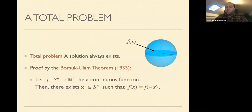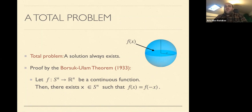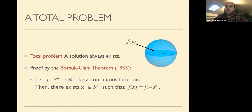The Borsuk-Ulam theorem will appear a few times throughout the talk. For completeness: it states that if you have a continuous function from the n-dimensional sphere to n-dimensional real space, then this function has a fixed point — meaning there exists an x such that f(x) equals f(−x).